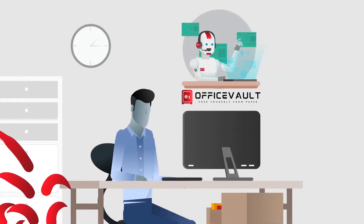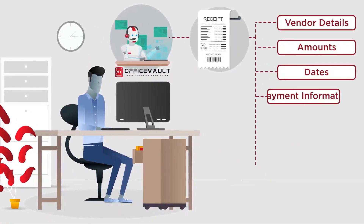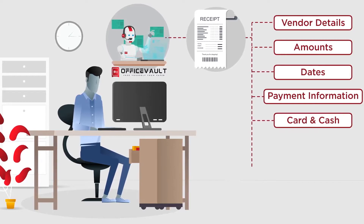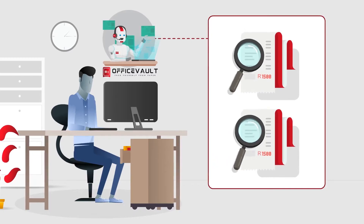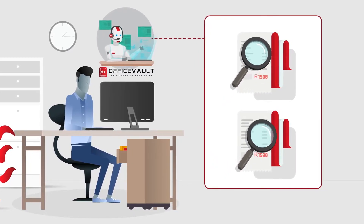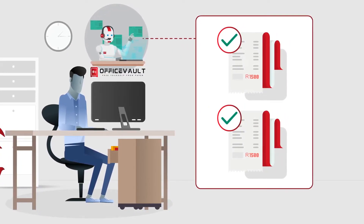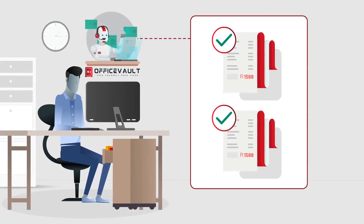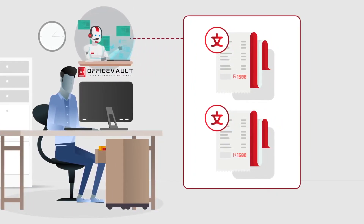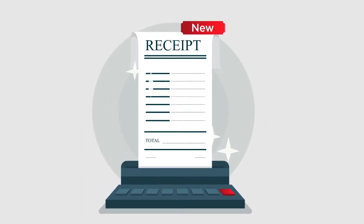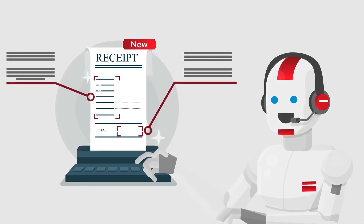You can tell the engine what you want, and it will capture it — vendor details, amounts, dates, payment information including card and cash, taxes, line items, and more. Through machine learning, it constantly learns with every receipt processed. AI can automatically monitor your credit card statements and prepare or submit your expense claims for you. No matter how many different looking receipts you have or what languages they're in, new receipt layouts are no problem, as OfficeVault will detect a new receipt and work out where to get the information from.